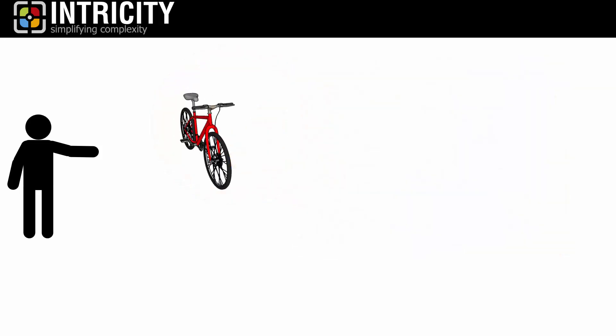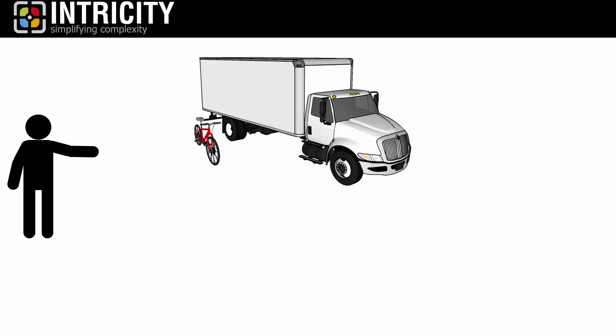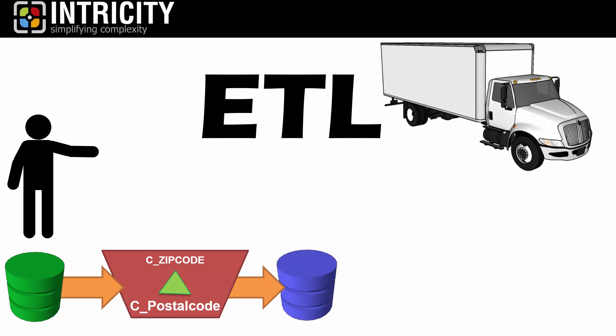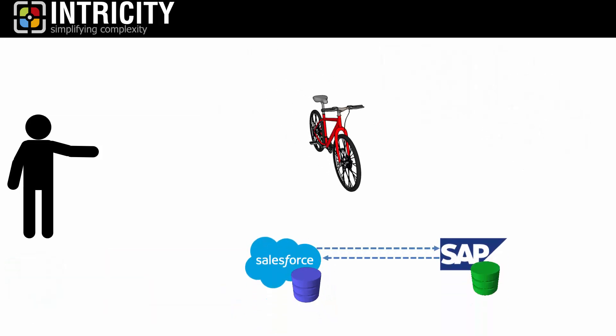These strange analogies have a very similar parallel in the data world. When we're trying to move large quantities of data, often the tool of choice is an ETL tool, which stands for Extract, Transform, and Load. However, when we're communicating between individual application processes, we often use an Enterprise Service Bus, or ESB.